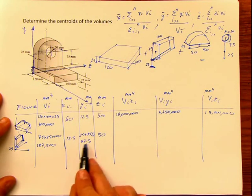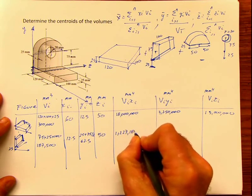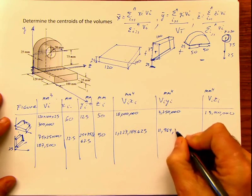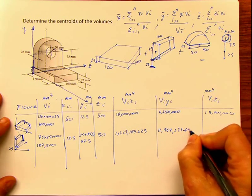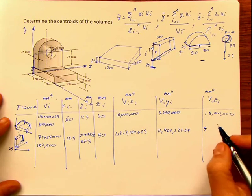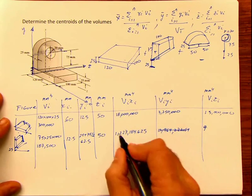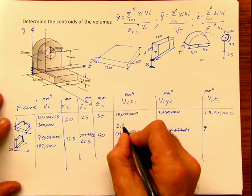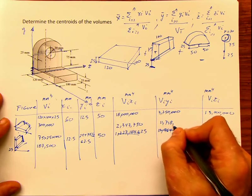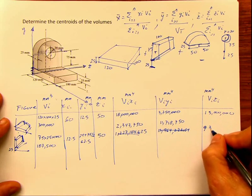Multiplying for Figure 2: V·x = 2,343,750; V·y = 11,718,750; V·z = 9,375,000.